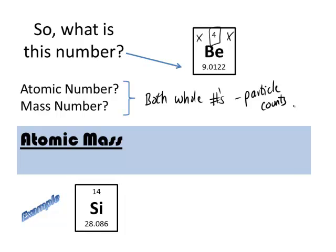So that number on the bottom is very similar. It's close to the mass number, but it's not a whole number. And what it is is the atomic mass, which is a weighted average of the different masses of the isotopes, so a weighted average of the isotopic masses.